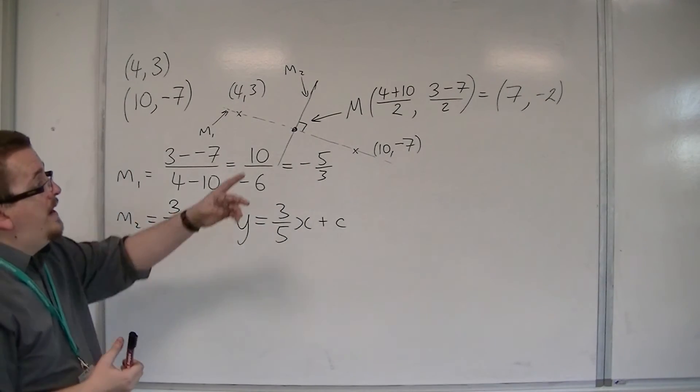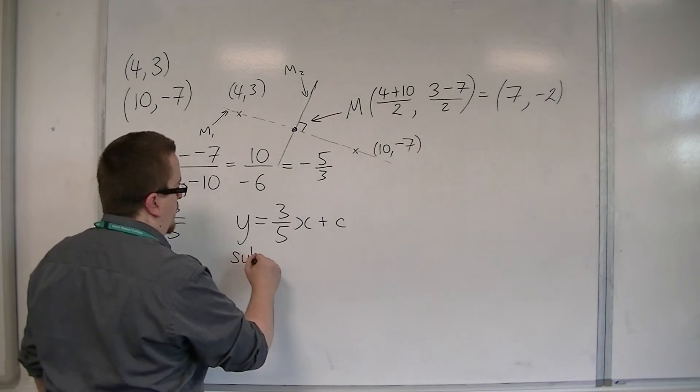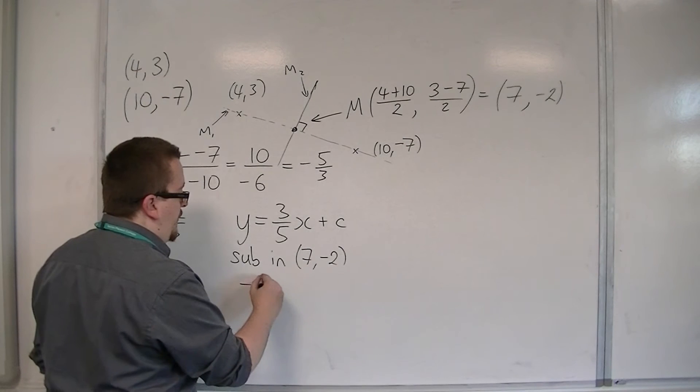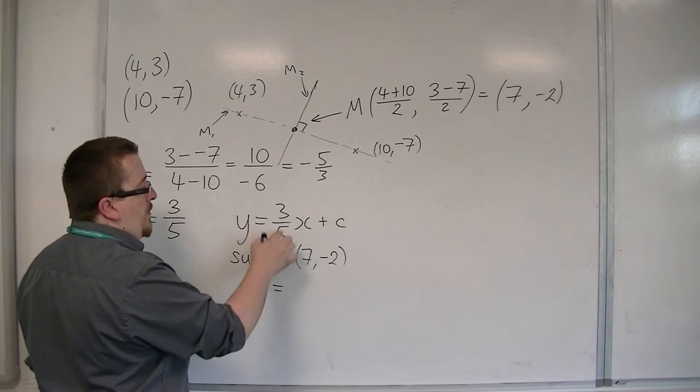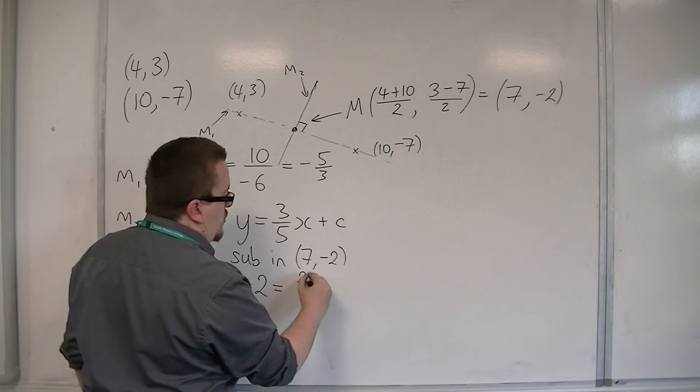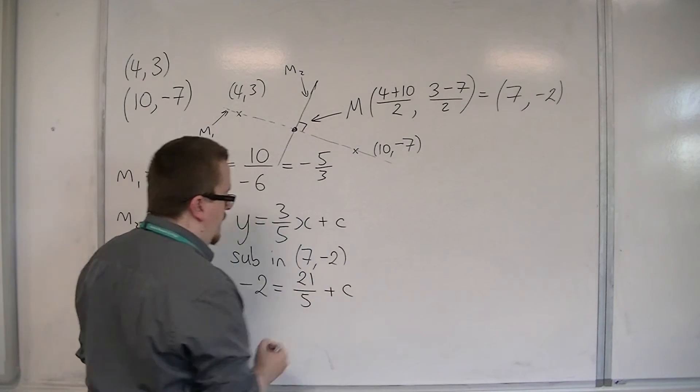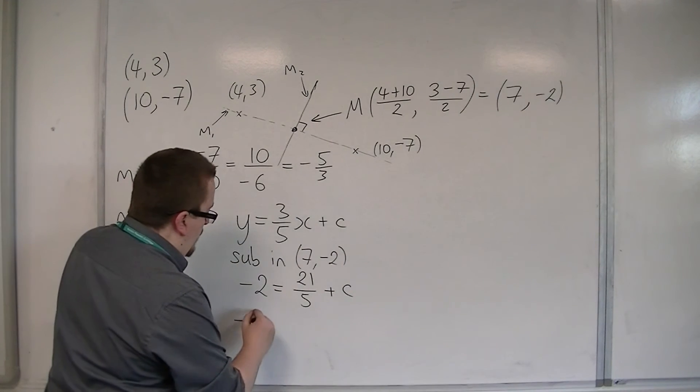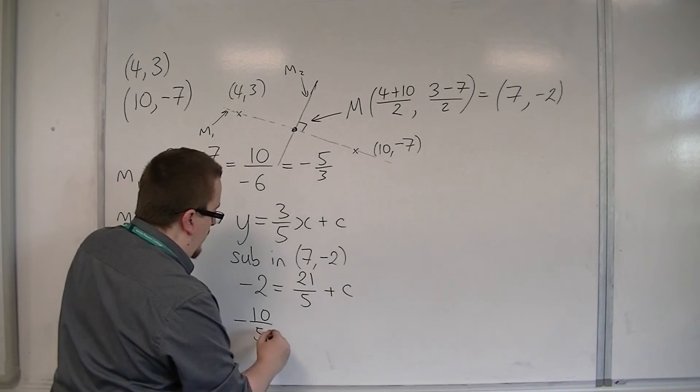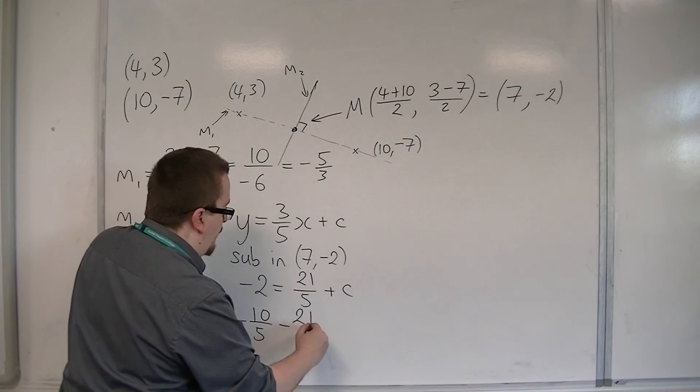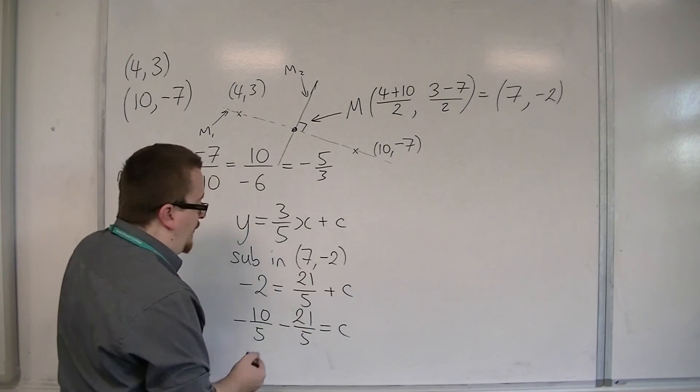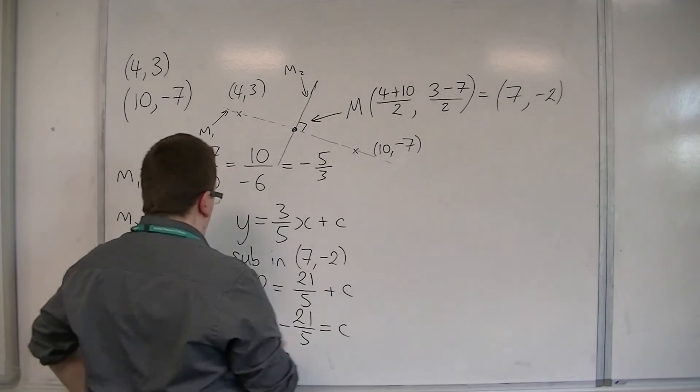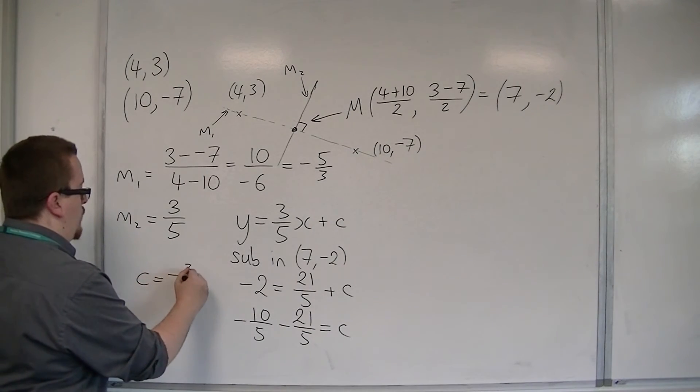The y becomes minus 2, the x becomes 7, so 3 fifths times 7 is 21 over 5. Now, 2 is 10 over 5, so this is minus 10 over 5. Take 21 over 5 from both sides, and that will leave me with c. That's minus 31 over 5. So, c is minus 31 over 5.